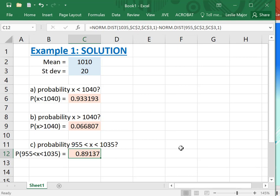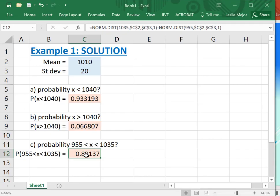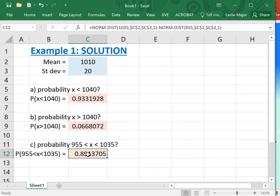So the answer: 0.89137. You can keep as many decimals as you want or not when you're working in Excel. If you're punching an answer into the MyStatLab or the learning hub, just be careful, or be mindful to watch for decimals.